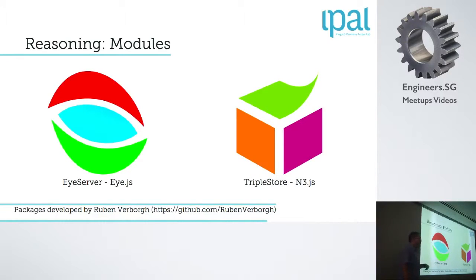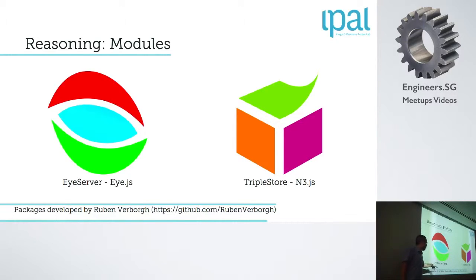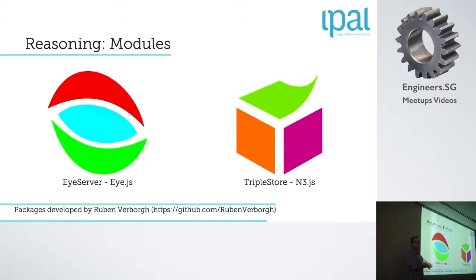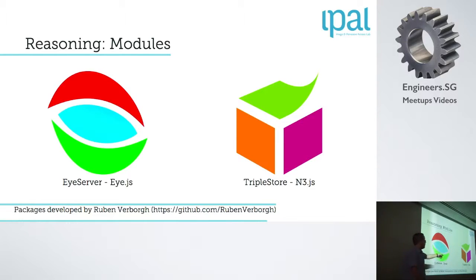But we have to bring this to the web. Basically we have two packages we need to install: EyeServer and triplestore-N3.js. Both were made by Ruben Verborgh, a Belgian researcher in semantic web. EYE is a desktop-based reasoner, but you can bring it to the internet using EyeServer — it's an NPM package for Node.js. You can also bring semantic web concepts using the triplestore and handle this data using Node.js and N3.js.